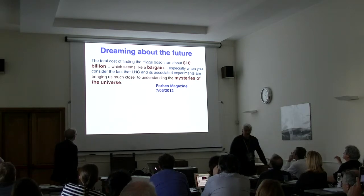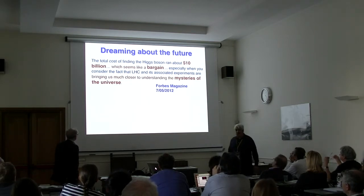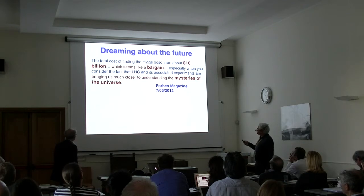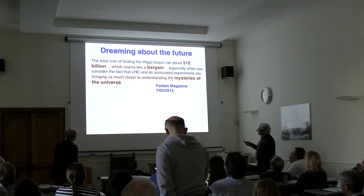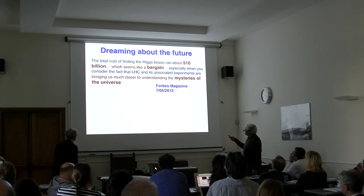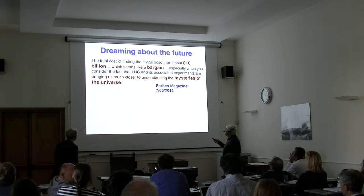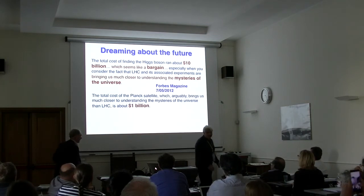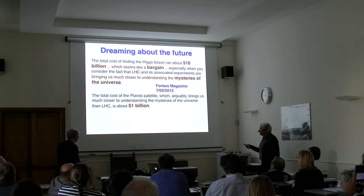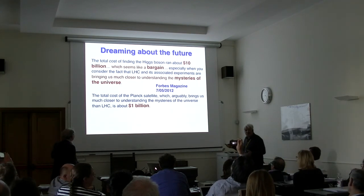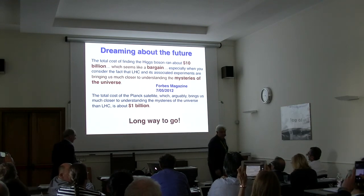As a concluding slide: I opened Forbes magazine some time ago and saw that the total cost of finding the Higgs boson was about 10 billion dollars, described as 'a bargain' because the LHC brought us much closer to understanding the mysteries of the universe. The Planck satellite, which is bringing us much closer to understanding the structure and beauty of the universe, cost 10 percent of that. We have a long way to go. Thank you.